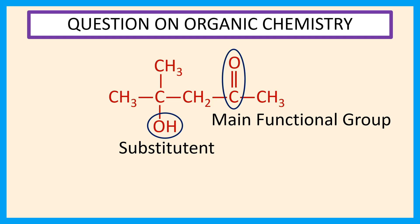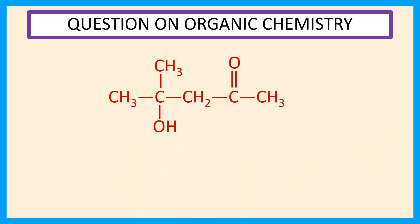Assign numbers to the carbon chain so that the keto group gets the lowest number. Therefore: one, two, three, four, and five. This compound contains two substituents at position four.